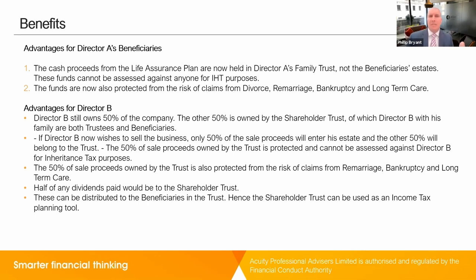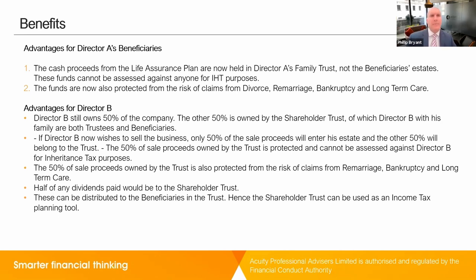If Director B wishes to sell the business, only 50% of the sale proceeds will enter his estate, essentially cutting the inheritance tax liability in half. The other 50% will belong to the trust, protected and cannot be assessed against Director B for inheritance tax purposes, and also protected from the risk of claims from remarriage, bankruptcy and long-term care. Lastly, half of any dividend payments would go into the shareholder trust and can be distributed to the beneficiaries, meaning the shareholder trust can actually be used as a really powerful income planning tool.